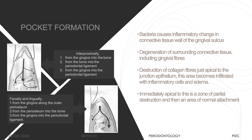Why discuss pocket formation here? Without pocket formation there will generally not be bone destruction. Most of the time pocket formation and bone destruction occur concomitantly, with some exceptions like trauma from occlusion — where bone loss can happen without pocket formation. The inflammation present in the sulcus or pocket enters circulation through blood vessels and goes directly to the bone, resulting in bone destruction.